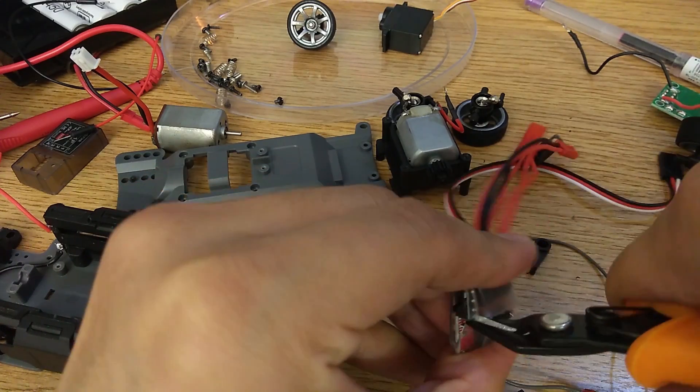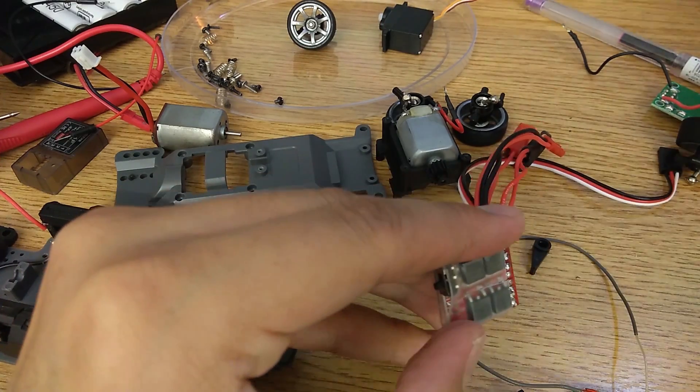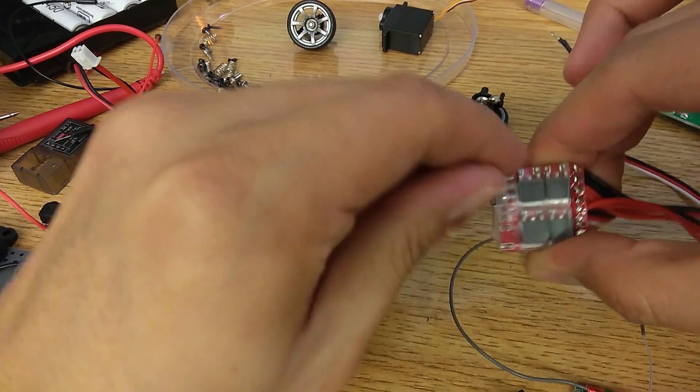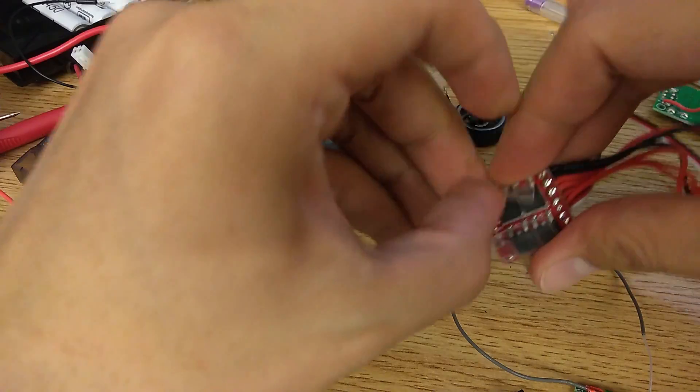As for the ESC, I'm cutting the wrap off so I can test fit it inside the car for now. Later, I'll swap all the wires to be on the other side of the board.